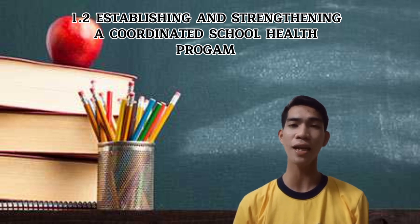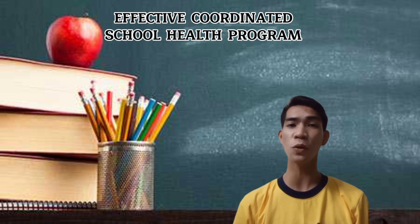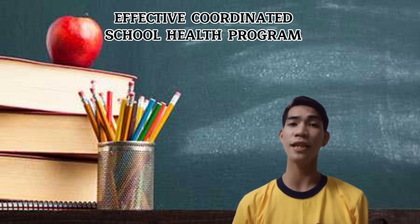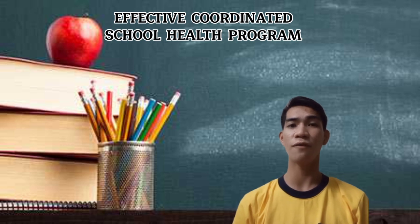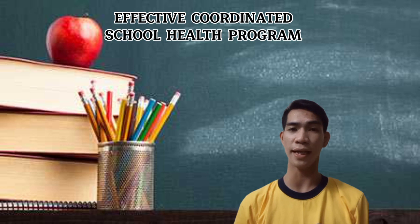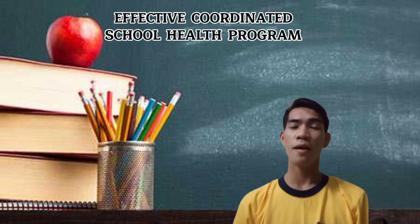In this topic, we talked about the Effective Coordinated School Health Program. There are eight components that can lead to an effective Coordinated School Program: first, leadership; second, advisory committee; third, board policy that are supportive; fourth, map of existing school-based and community-based resources; fifth, PIP need assessment; sixth, programmatic needs; seventh, plan development; and lastly, ongoing evaluation.